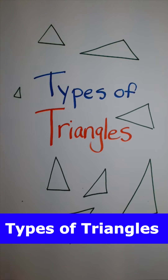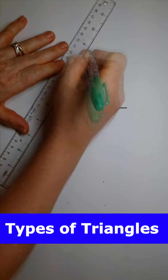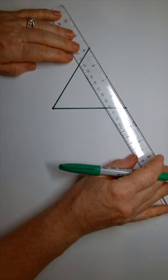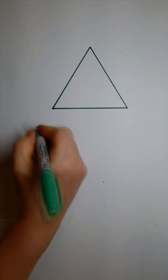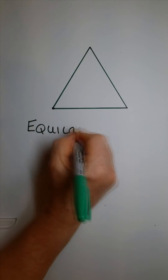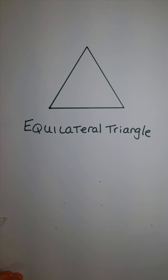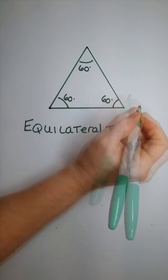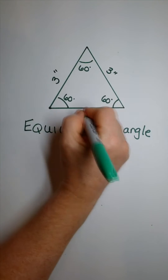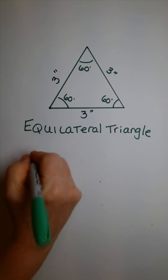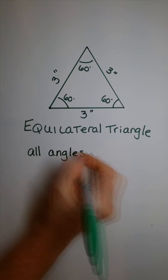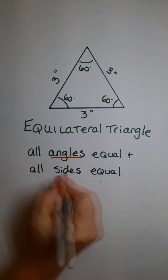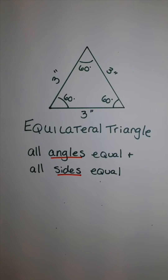The three different types of triangles have different angles and different sides. An equilateral triangle has all acute angles, meaning they're all less than 90 degrees, and their sides are all equal. So if it's three inches on one side, the other two sides are also going to be three inches.